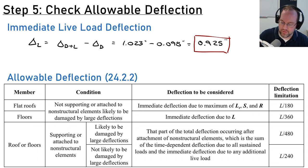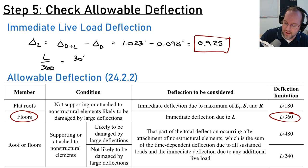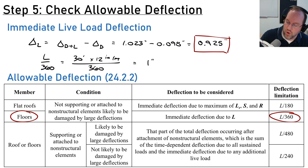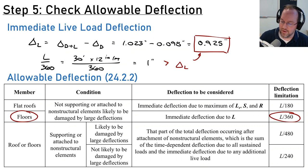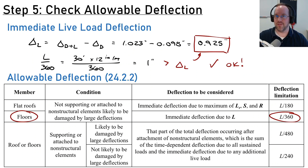Now let's check against the allowable limit. Assuming floors not supporting non-structural elements, the limit is L/360 = (30 × 12) / 360 = 1.0 inch. Our live load deflection of 0.925 inches is less than 1.0 inch, so we are okay — this beam is allowable per the code for deflections. That is how you calculate the deflections of a reinforced concrete beam under live loading.